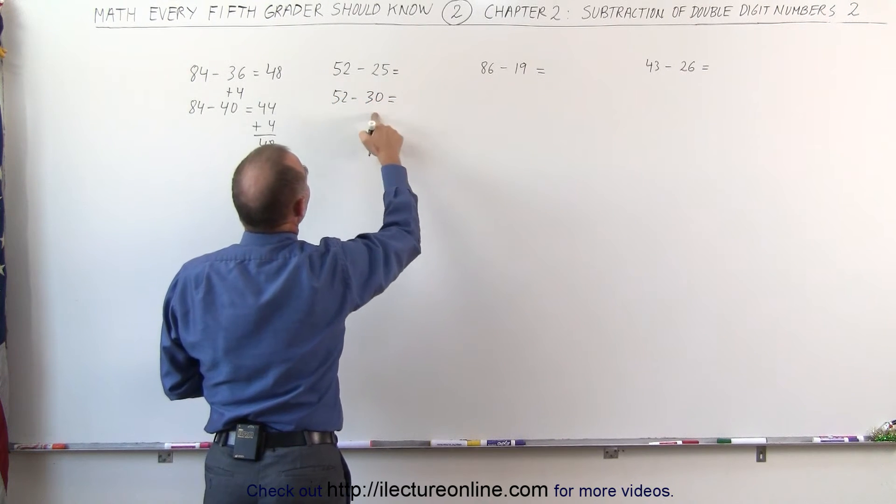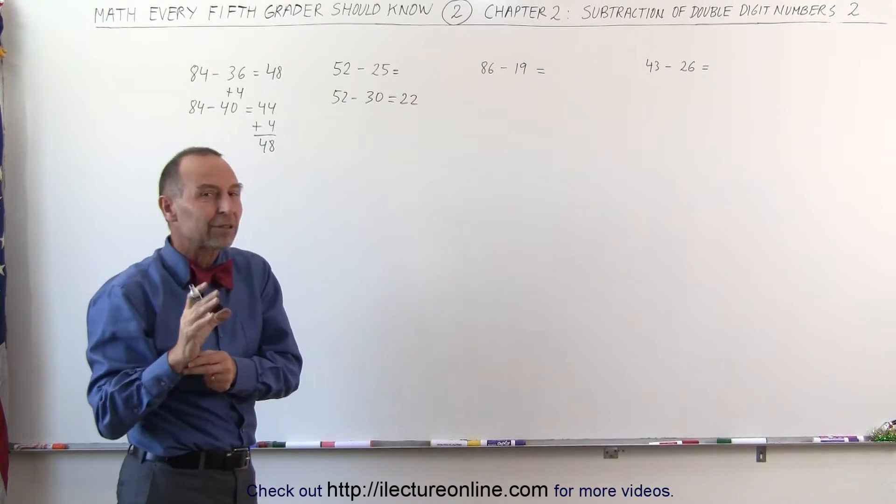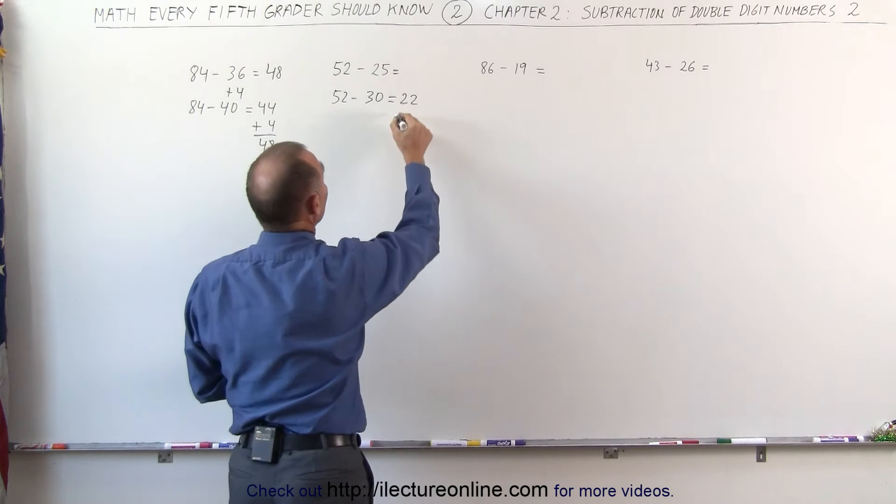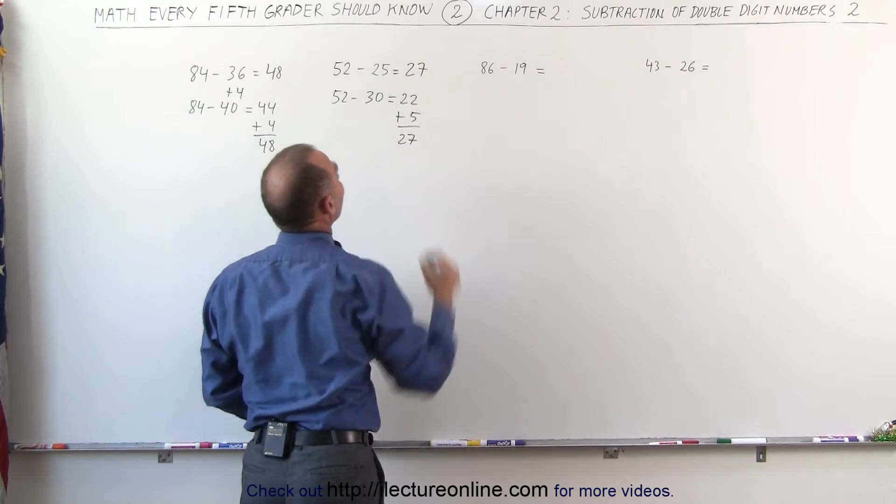And when I do that, 50 minus 30 is 20. That gives me 22. But remember, I subtracted 5 more than I should. That means I need to add 5 more to the answer. So that gives me 27, which is my final answer.